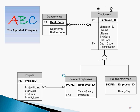Now looking at the entire database, we can see how employees only needs to appear one time. Employees have a relationship with departments and employees have two subtypes. One of those subtypes, salaried employees, has a relationship with projects.